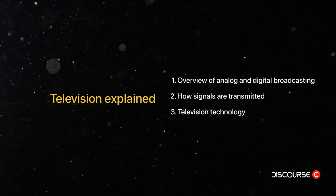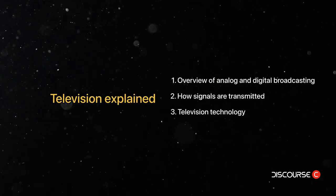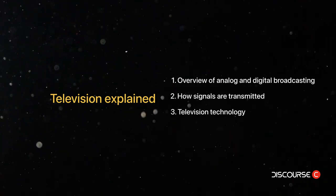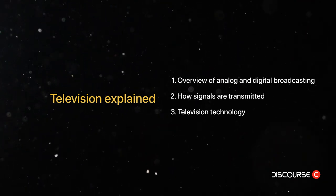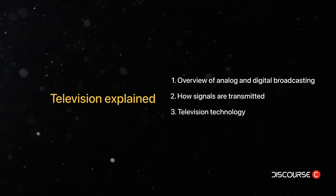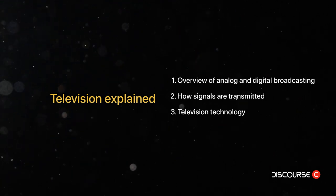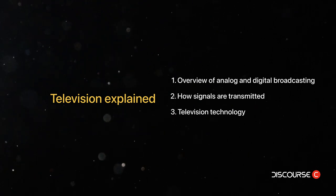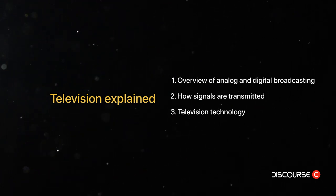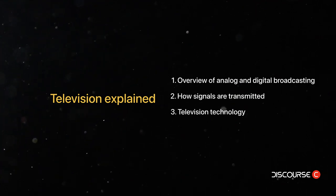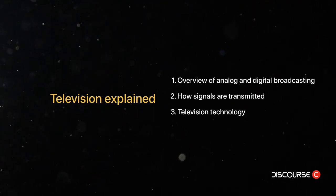CRT televisions were popular in the past, but they have been largely replaced by more modern technologies, such as liquid crystal displays, or LCD, and organic light-emitting diodes, or OLED. LCD televisions use a liquid crystal layer between two glass plates to display the images. The liquid crystal layer is sandwiched between a backlight and a polarizing filter, which controls the amount of light transmitted through the liquid crystal layer. The liquid crystal layer can be controlled by an electric current to change the orientation of the crystal molecules and allow or block the light from the backlight, creating the images on the screen.